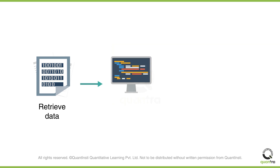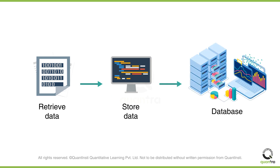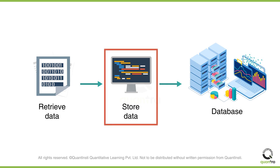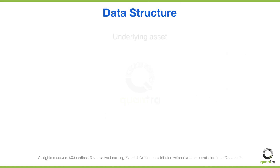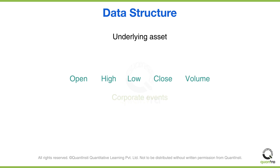Once you have the data, you have to store it in a proper structure, creating a database for carrying out analysis. For the underlying asset, the bare minimum data you need is the OHLCV data — that is, the price and volume data. If you also have information related to corporate events, then that's even better.